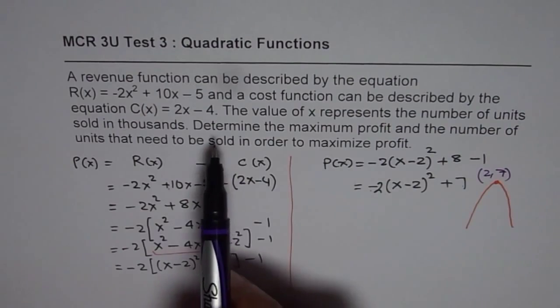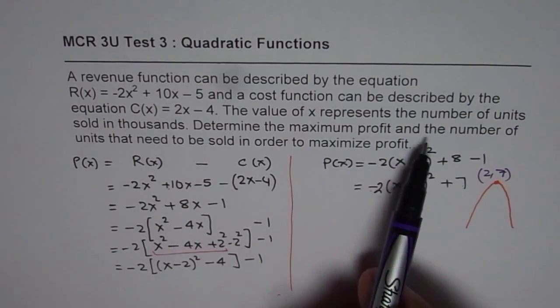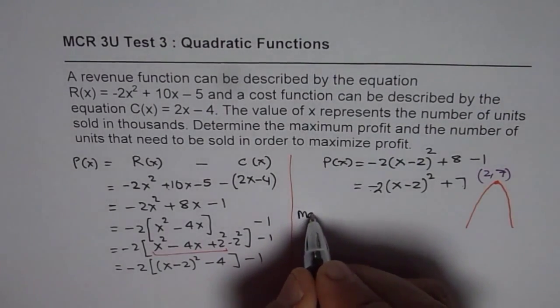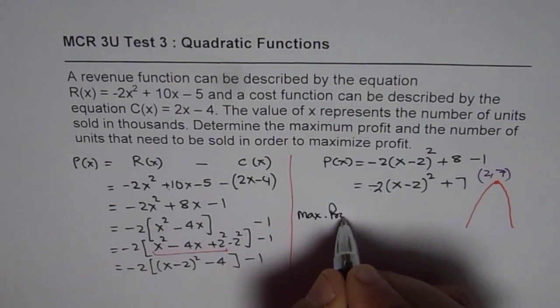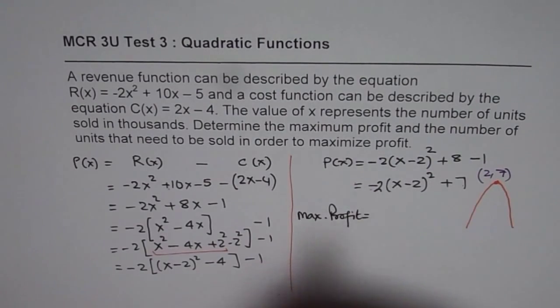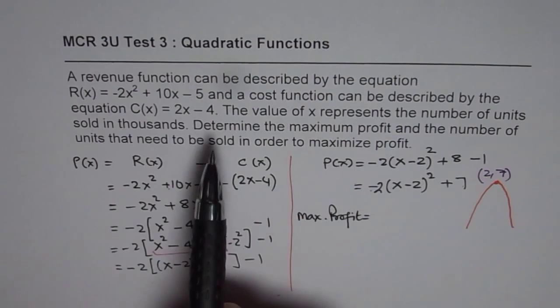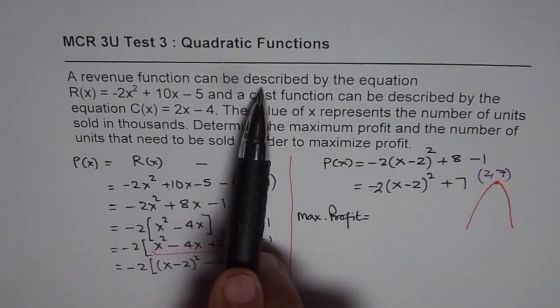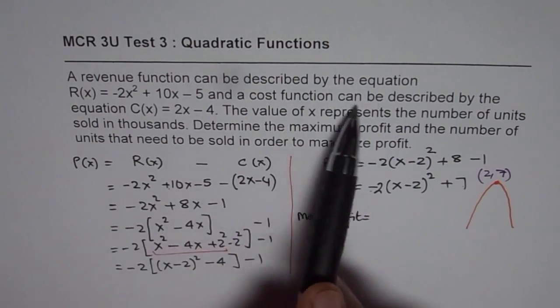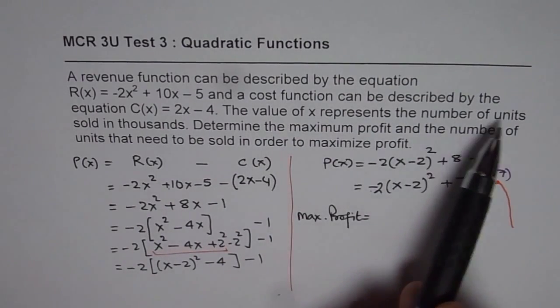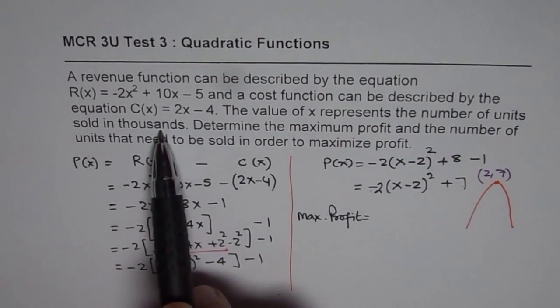So that is the solution. Determine the maximum profit and the number of units need to be sold. So maximum profit is how much? Units are very important. So let's read the question once again. It says the revenue function can be described by this and the cost function can be described by that. The value of x represents the number of units sold in thousands.